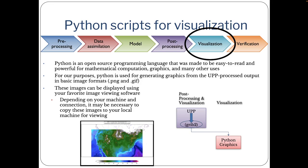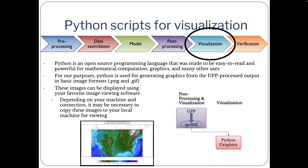Python is used in this tutorial for visualization of the forecasts. Python is an open-source programming language that is easy to read and powerful for mathematical computation, graphics, and other uses. For our purposes, Python is used for generating graphics from the UPP processed output in basic image formats. The images can then be displayed using your favorite image viewing software.